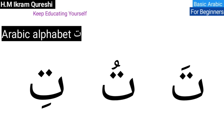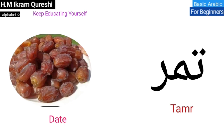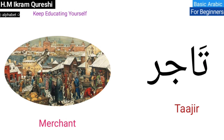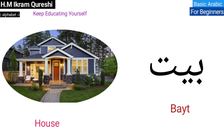Now we are going to learn the words that start with the letter Ta. Are you ready? The first one: Tamar — date. Let's repeat: Tamar — date. The next one: Tajir — merchant. Let's repeat: Tajir — merchant.